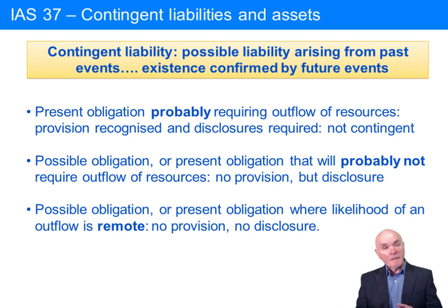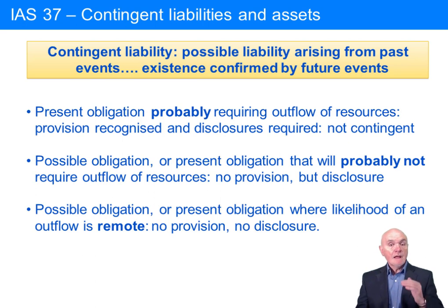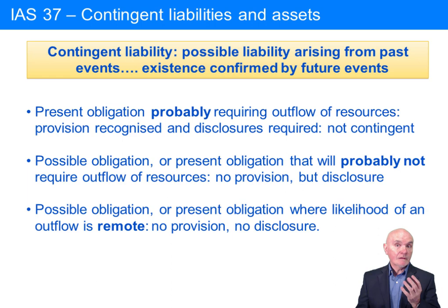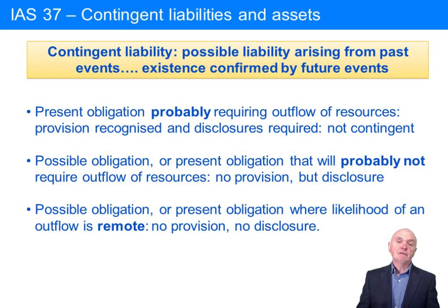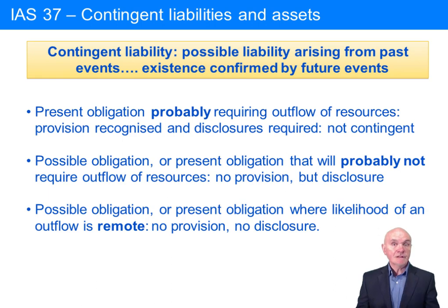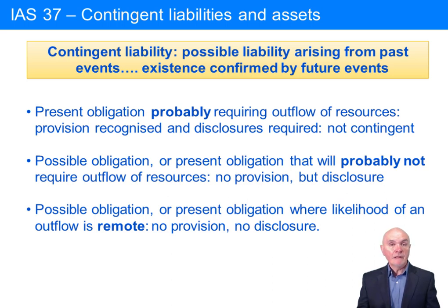Just to recap the order: if it's a probable obligation, we take the hit — this is in line with the ideas of prudence and being cautious in your financial statements. If it's probable we're going to have to pay, we take the hit in the profit and loss account. If it's merely possible, we note it. And if it's remote — very unlikely — we don't bother anyone at all with it.